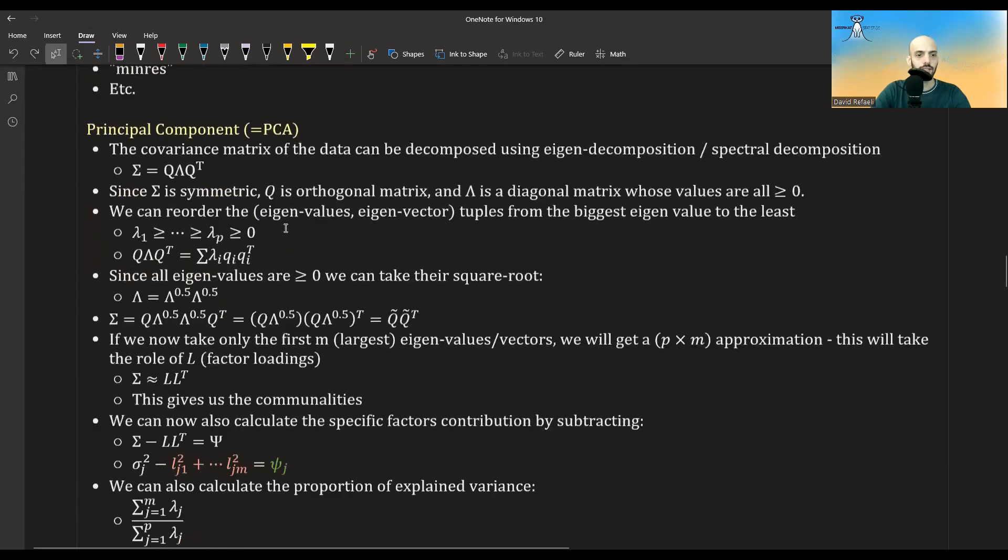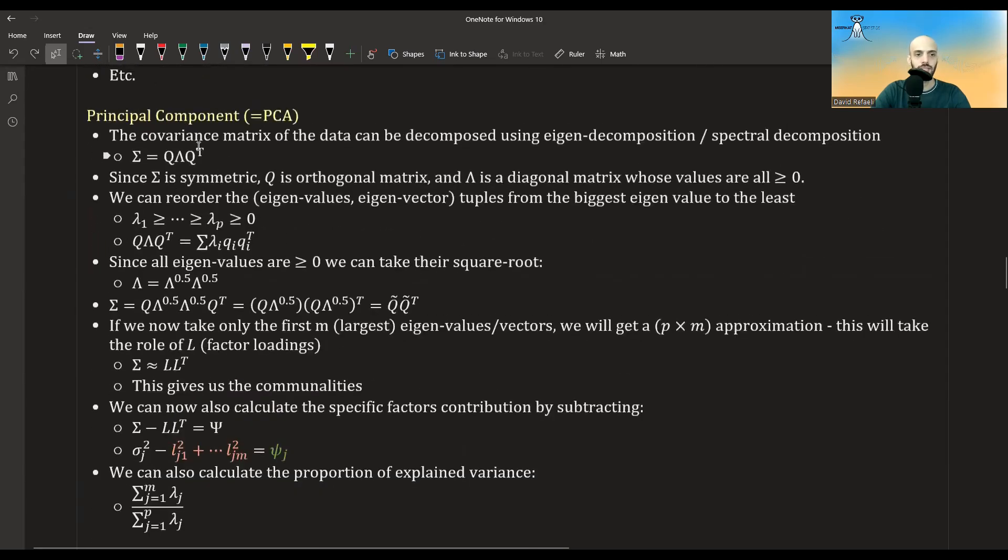Okay, so what is the principal component method? It's basically doing PCA. We look at the covariance matrix, we do an eigen decomposition or a spectral decomposition of it into orthogonal matrix, diagonal matrix, and the transpose of the diagonal matrix. And since this is a covariance matrix, we are guaranteed that all the eigenvalues will be greater or equal to zero.